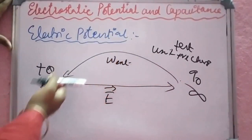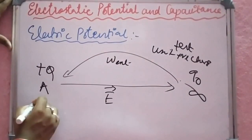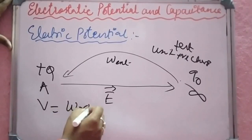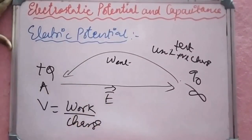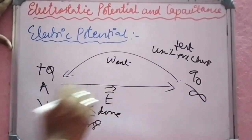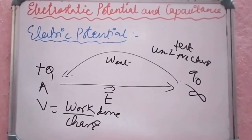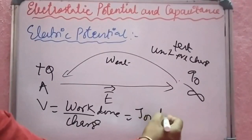It is all about work done — moving a charge to a point gives us the electric potential. So the electric potential formula: V is equal to work done by charge, divided by charge. The unit is Joule per Coulomb.